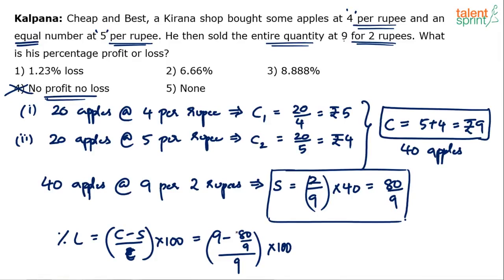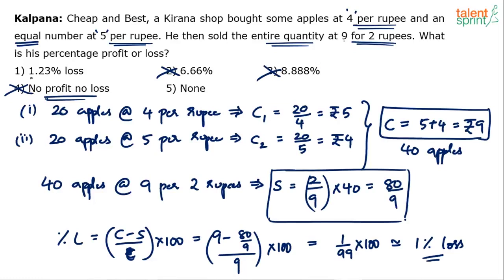It is approximately no profit no loss, but actually it is a loss. 9 times 9 is 81, 81 minus 80 is 1, giving 1 by 81 into 100, which is 100 by 81. That is approximately 1 percentage loss — slightly more than 1. 100 by 81 is close to 5 by 4, since 5 times 20 is 100 and 4 times 20 is 80. So 5 by 4 is like 1.25, but 100 by 81 is slightly less than 1.25.